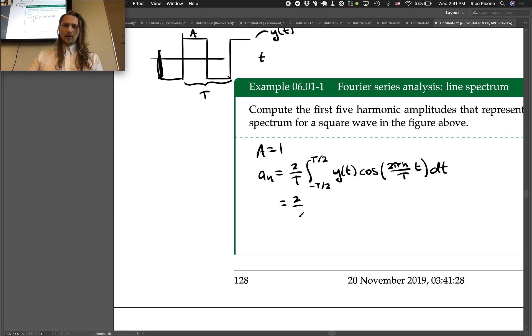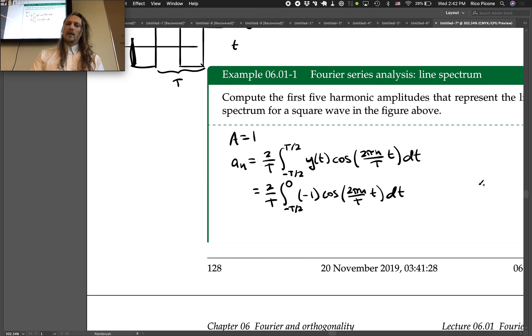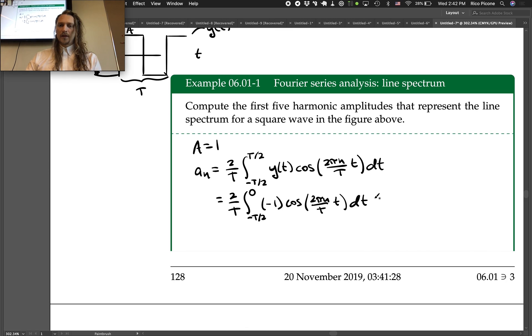So we have 2 over t times negative t over 2 to 0 of negative 1 times cosine of 2 pi n over t t dt. And that's the first half of it, plus 2 over t integral from 0 to t over 2 of positive 1, or positive a if we were going to do the more general case, cosine 2 pi n over t dt.